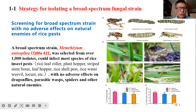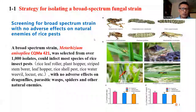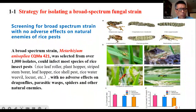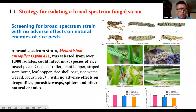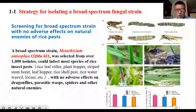Part 1: functions of Metarhizium anisopliae CQMA421. Our strategy for isolating a broad-spectrum strain was to screen for strains with no adverse effect on natural enemies of rice pests. A broad-spectrum strain, Metarhizium anisopliae CQMA421, was selected from over 1,000 isolates. It could infect most species of rice insect pests with no adverse effect on dragonflies, parasitic wasps, spiders, and other natural enemies.